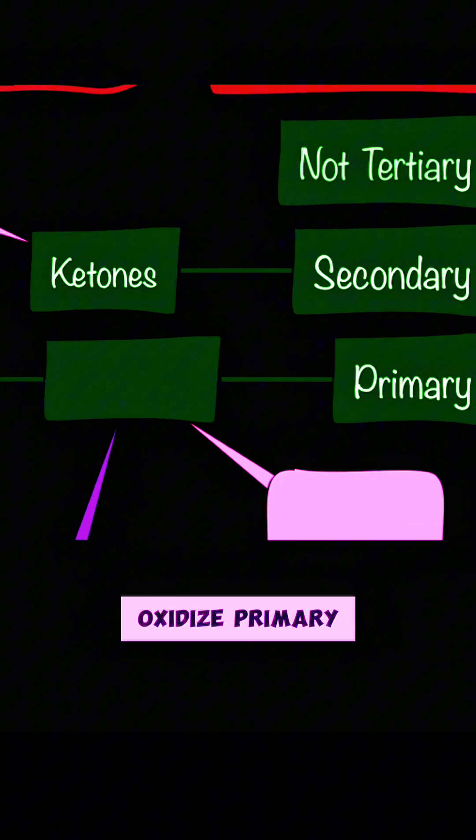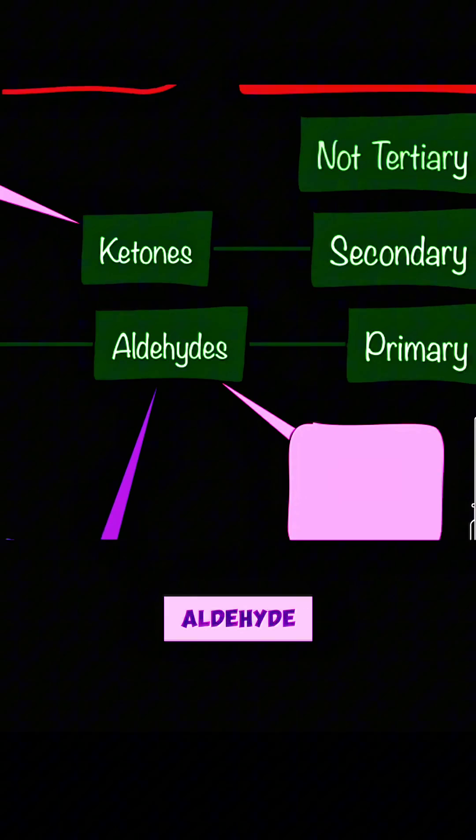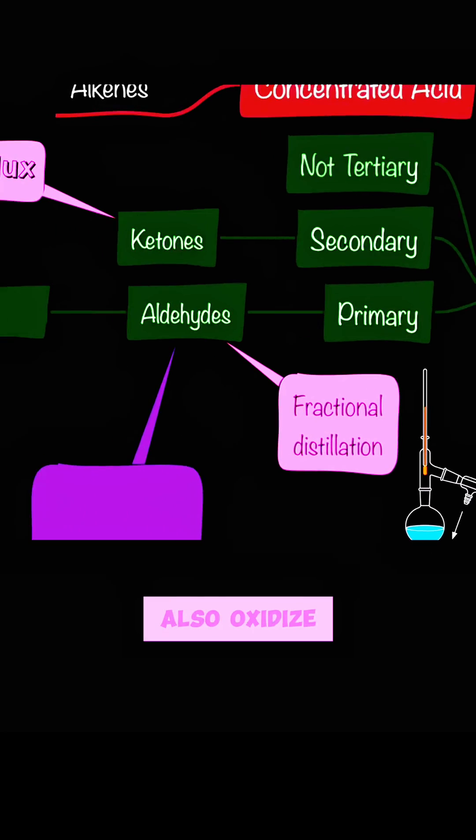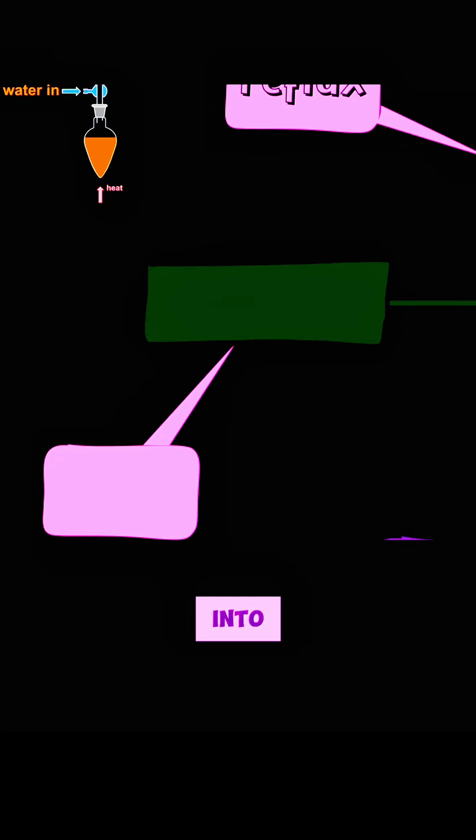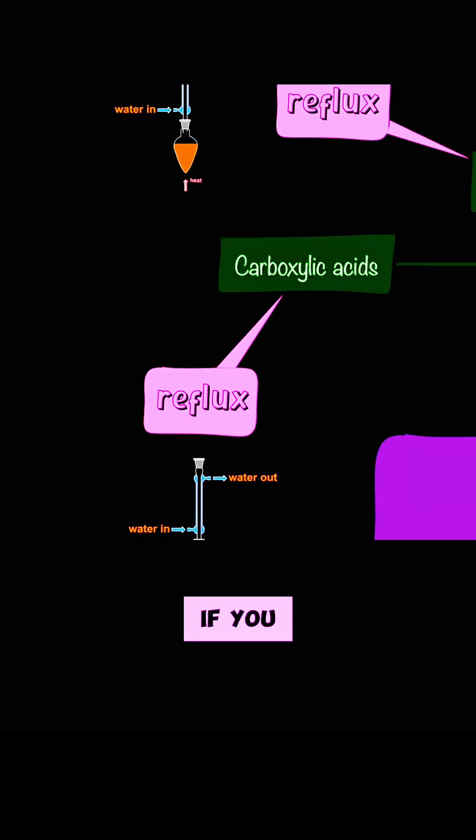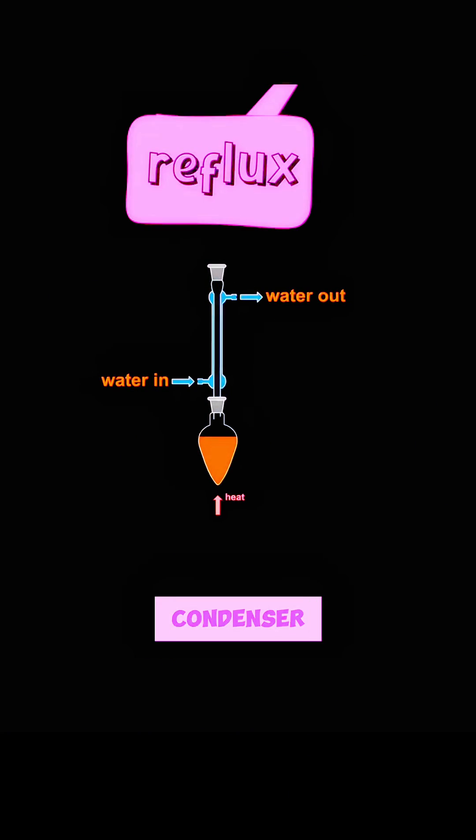You can oxidize primary alcohols into aldehydes using fractional distillation. You can also oxidize primary alcohols into carboxylic acid if you heat in a reflux condenser.